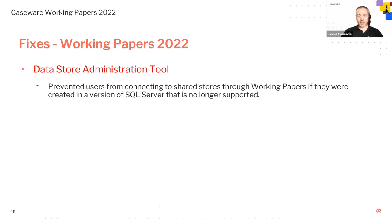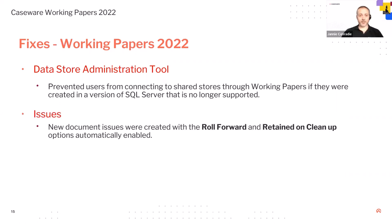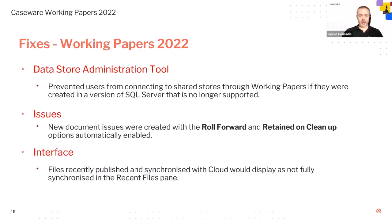For the Data Store Administration Tool, they fixed an issue that prevented users from connecting to shared stores through Working Papers if they were created in a version of SQL Server that is no longer supported. They also fixed an issue where new document issues created with the roll forward and retain on cleanup options were automatically enabled. On the interface file, they fixed an issue where files recently published and synchronized with cloud would display as not fully synchronized in the recent files pane.